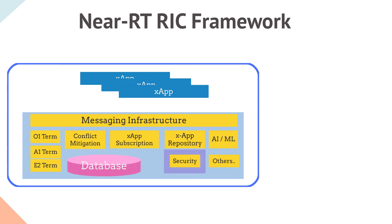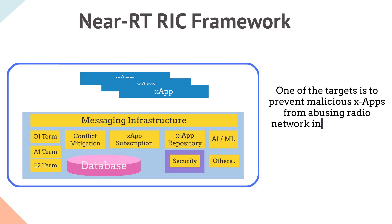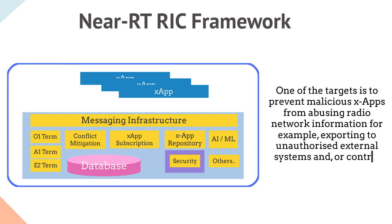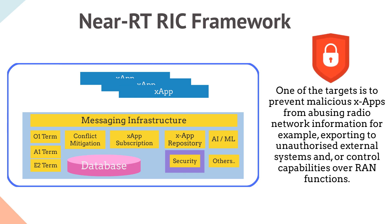Next is the Security Service, which applies specifically to the Near-RT-RIC. One of its targets is to prevent malicious X-Apps from abusing radio network information — for example, exporting data to unauthorized external systems or gaining unauthorized control over RAN functions. It ensures that X-Apps supplied by a vendor cannot exploit or hack the system, making security a crucial focus area.